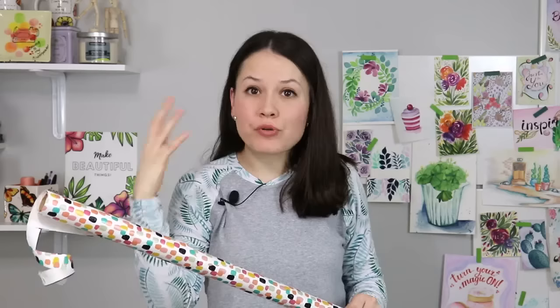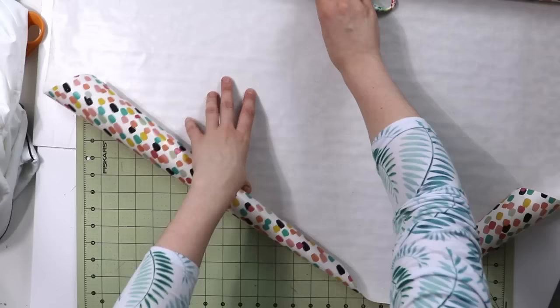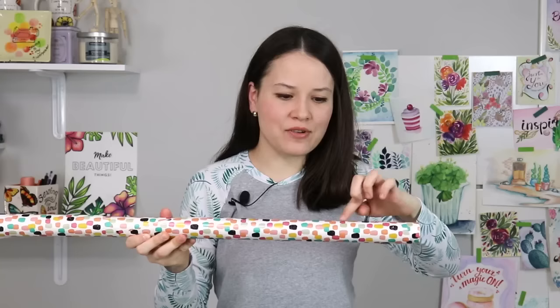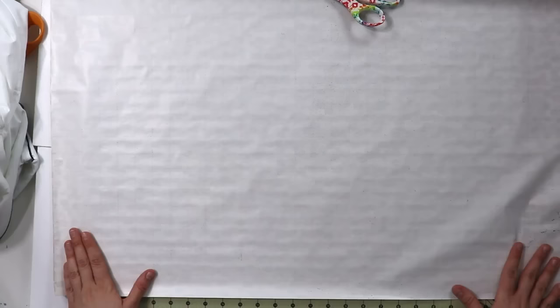Once you have the measurement of your side seam go ahead and use either a printer paper or newspaper or I usually use some wrapping paper that has already some grid lines on the inside which makes it really easy to use. And I didn't realize that this one comes with some glitter so if you see some odd black dots on the screen that's just that. So it is what it is.